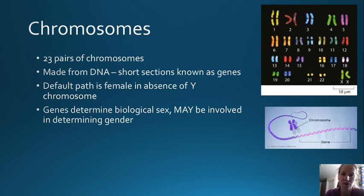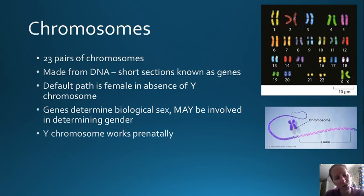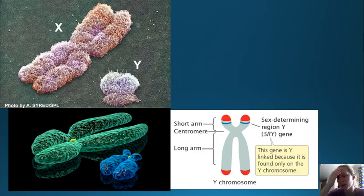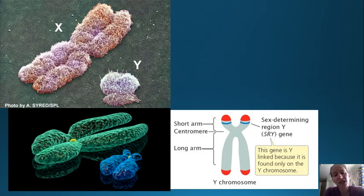The Y chromosome, if you have one, works prenatally - that is, before you're born in the womb - and it starts work immediately producing genitals. It has genes on it which cause the testes to develop, and also other genes which determine sperm production and the production of male hormones. One example is called the SRY gene, which stands for sex-determining region Y, which causes the testes to develop and in turn starts production of androgens - male hormones.